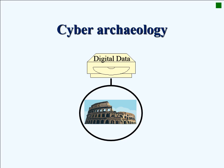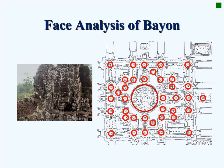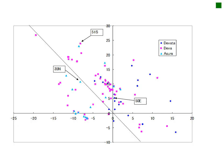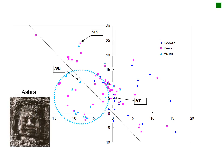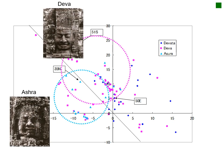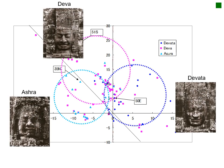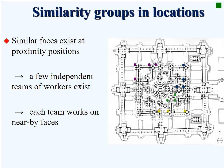The computer has better resolution than human eyes. For example, Bayon has 173 faces carved at 50 towers. We digitized all of them and analyzed them. It turns out that we can classify those 173 faces into three groups: Devata, Deva, and Ashura. Moreover, running similarity group analysis, we have found four similarity groups among the 173 faces.